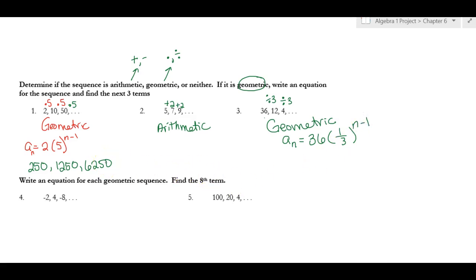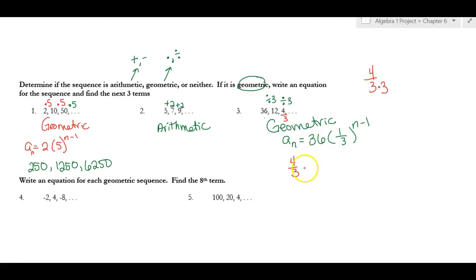Continuing the pattern from 4: dividing 4 by 3 gives 4/3. Then dividing 4/3 by 3 — the 3 goes on the bottom of the fraction — gives 4/9. Then dividing 4/9 by 3 puts another 3 on the bottom, giving 4/27. When you're dividing, you're just putting the divisors on the bottom of the fraction because that's where dividing goes.